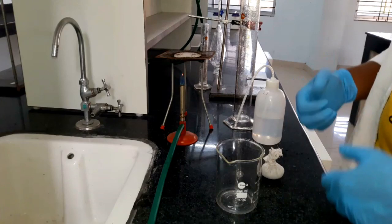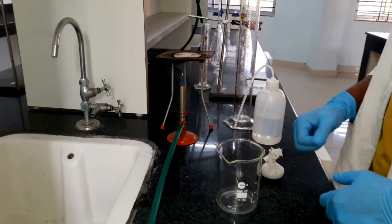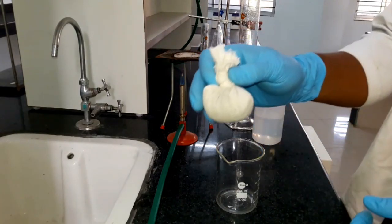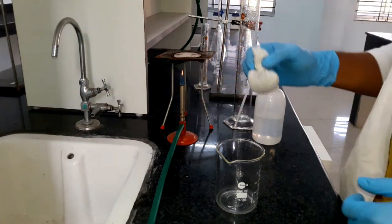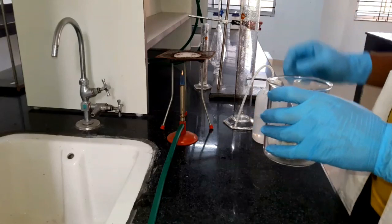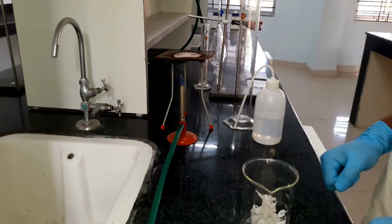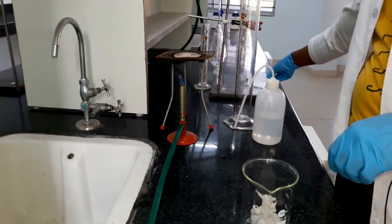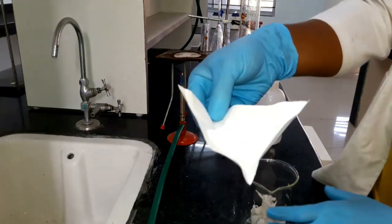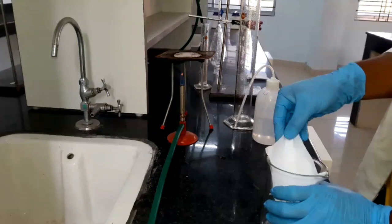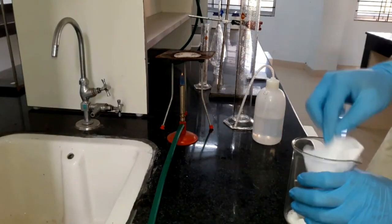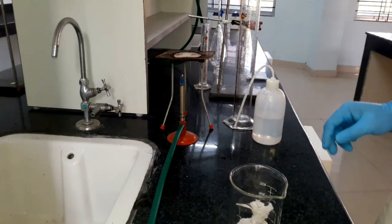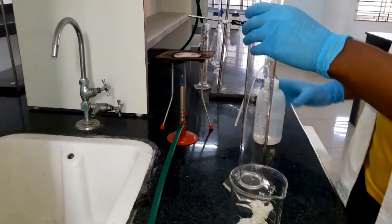Today we are going to extract caffeine from dry tea leaves. At first we take 15 grams of dry tea leaves in a 500 ml beaker, and then 10 grams of sodium carbonate is added to this beaker. Now we add 150 ml distilled water.